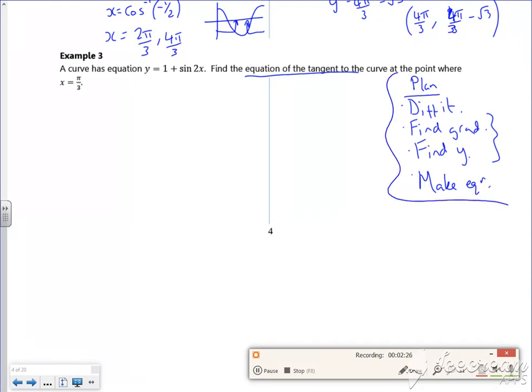So I differentiate y = 1 + sin(2x). So dy/dx is equal to 2cos(2x), since one disappears and sine goes to cos. When x = π/3, dy/dx is 2cos(2π/3), and that gives you -1. So dy/dx is -1. Remember, that's the gradient of the tangent.